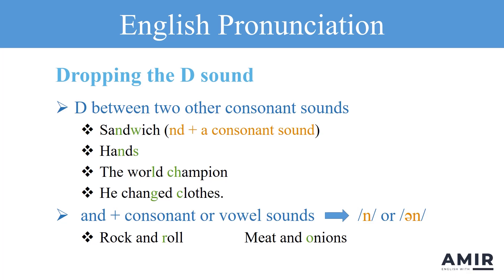Hello everyone. Dropped sounds are one of the reasons English speakers can sound like fast talkers. In today's lesson, we're going to talk about the dropped D sound in English. In fast speech, many native English speakers drop the D sound when it comes between two other consonant sounds, because pronouncing D in this position can be a bit difficult. Dropping the D sound helps you speak faster and more fluently in English.